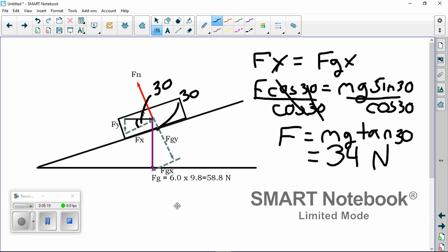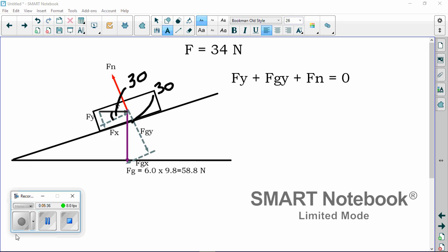For the second piece, I'm going to look at all the perpendicular components. This isn't perfectly drawn, because I'm doing this quickly. But notice that the Fy, Fg of y, will add together to cancel out the normal force. So, if I look at all the horizontal vectors here, Fy, plus Fgy, plus Fn, all has to equal 0.